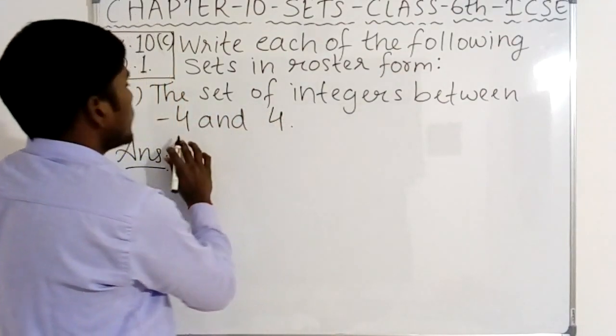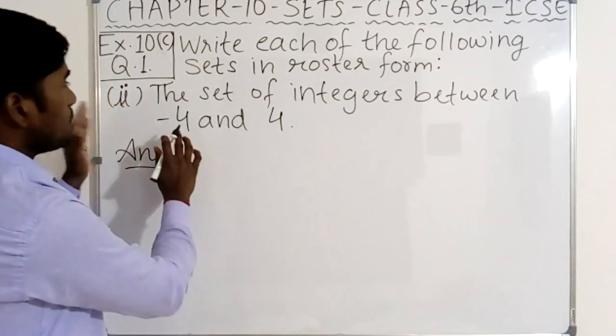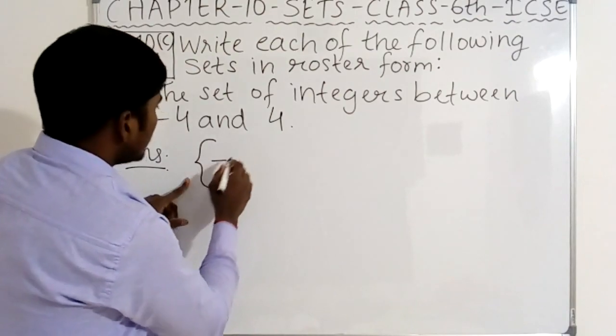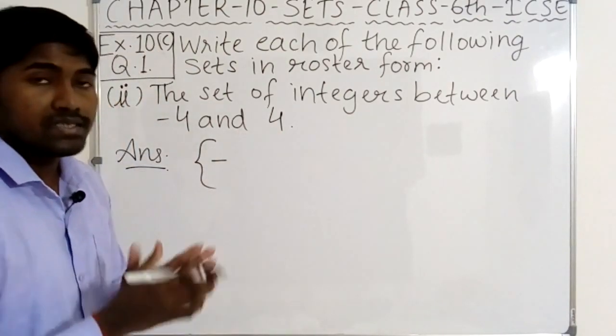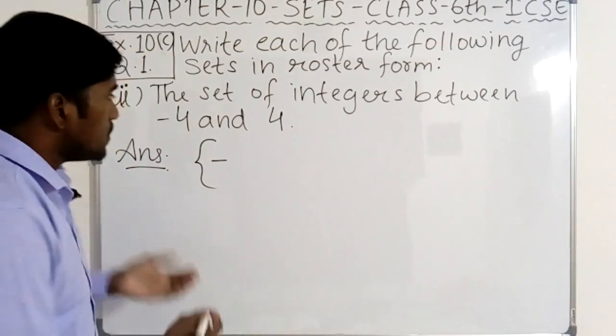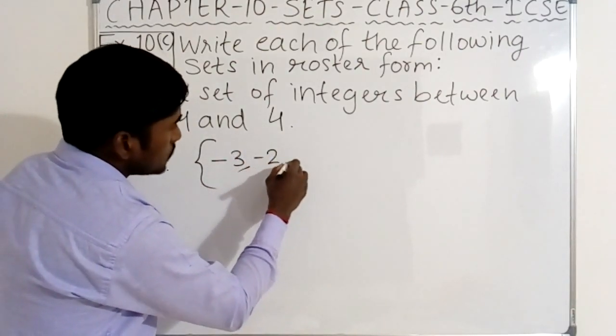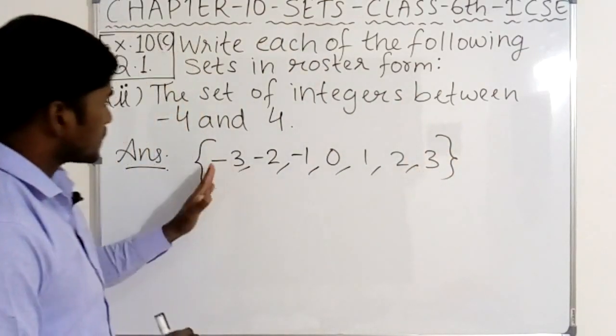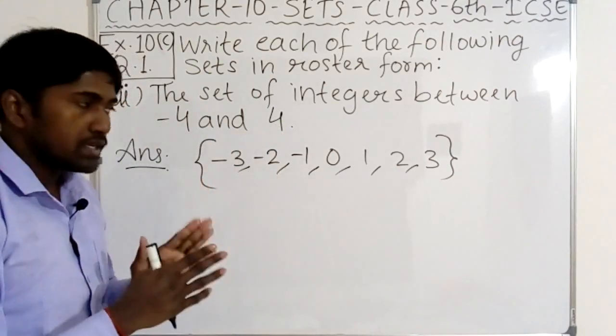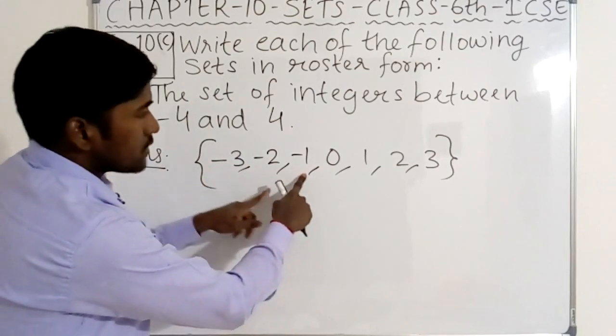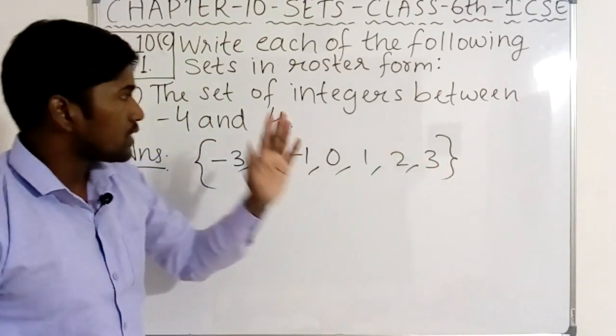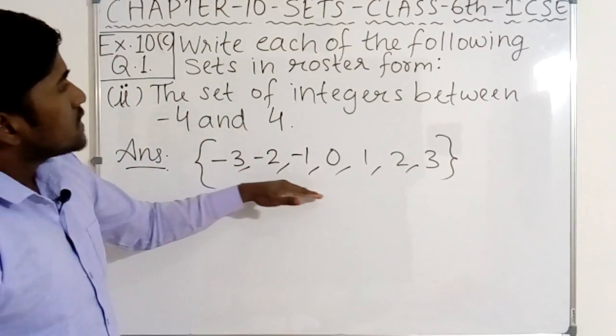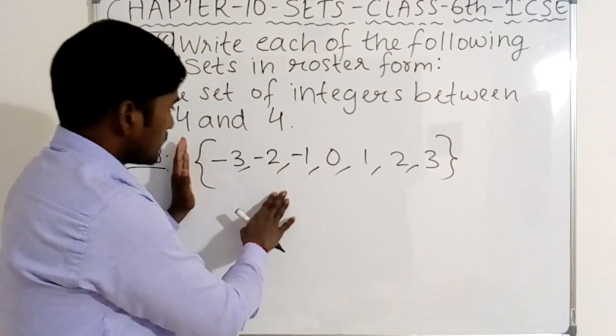Now see the second point. The set of integers between minus 4 and 4. So we have to write the integers between minus 4 and 4 as well as positive numbers. Integers are negative numbers, 0, as well as positive numbers. Then curly bracket open, minus 3, minus 2, minus 1, 0, 1, 2, 3. Between minus 4 and 4. In this set, this set is represented in roster form.